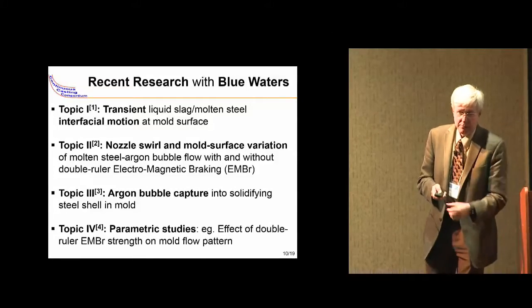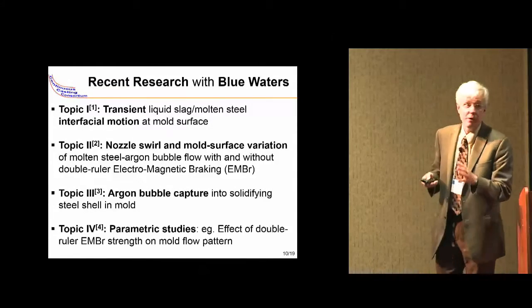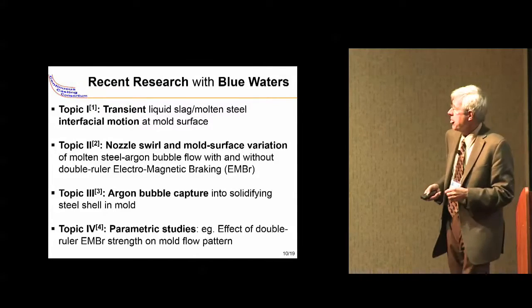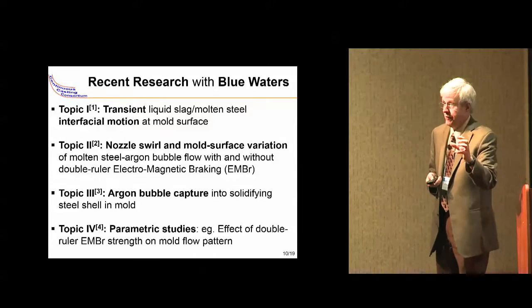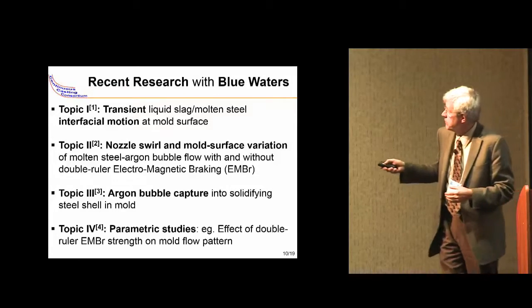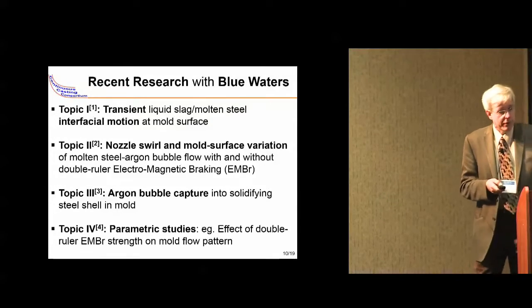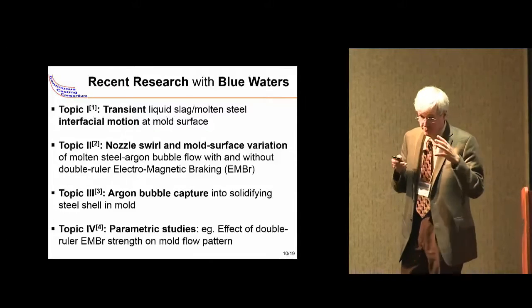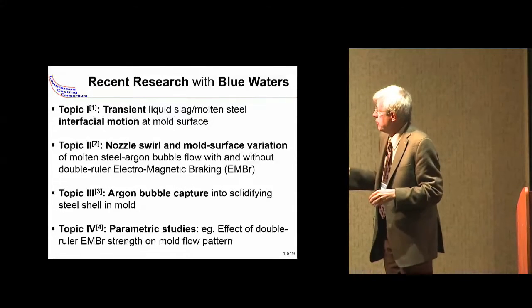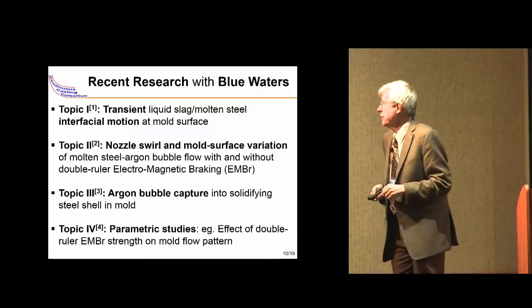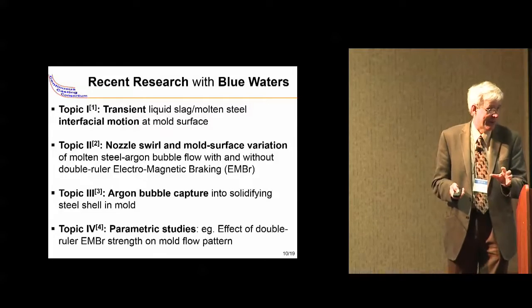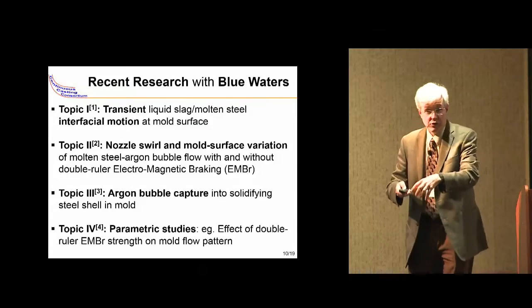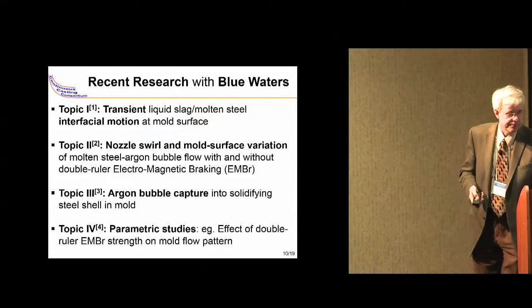I'd like to talk about some results we've obtained from four different projects. First, transient motion of the molten steel and the top interface—this is tricky because it did not parallelize very well but we were successful. Second, simulations with fluid flow, surface variation, argon bubbles, and electromagnetic breaking all together. Third, the capture of bubbles. Finally, once we have a model we understand, we can do parametric studies to figure out the best way to operate the real caster.